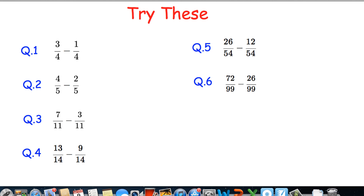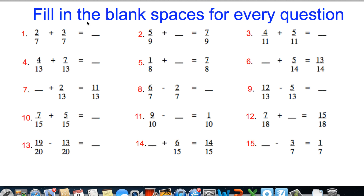The next thing I want you to do is we've got a little challenge for you. It's going to involve practicing adding or subtracting fractions, and I'm going to do two examples and then you can finish the rest. We want to fill in the blank spaces for every question. Looking at question seven: a blank space plus two-thirteenths equals eleven-thirteenths. What did I add to two-thirteenths to make eleven-thirteenths? Nine-thirteenths — nine plus two gives me eleven. So nine-thirteenths plus two-thirteenths gives me eleven-thirteenths. I know that's correct.